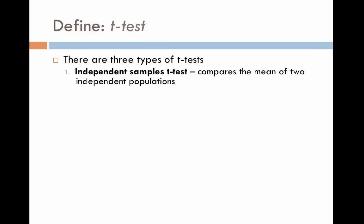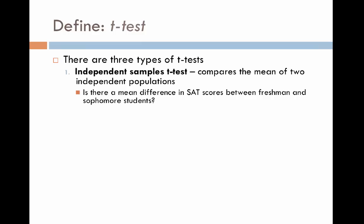A quick example of an independent samples t-test might be: is there a mean difference in SAT scores between freshmen and sophomore students? We're comparing the average score between two independent populations — freshmen and sophomores. Also note that the dependent variable — the outcome variable we're testing between the two populations — must be a continuous variable. The easiest way to know if it's continuous is if it's a number. SAT scores are measured as a number, so we know we've got a continuous dependent variable.